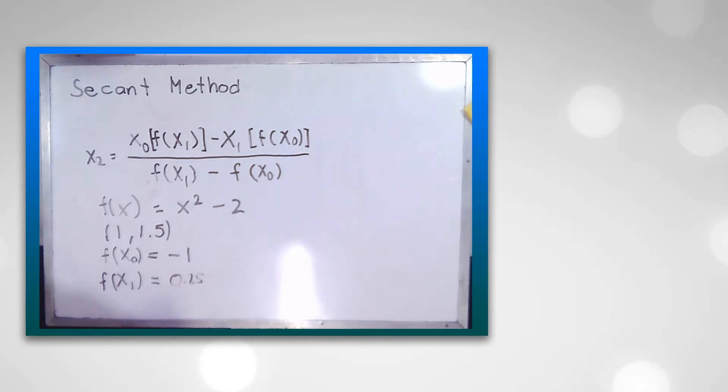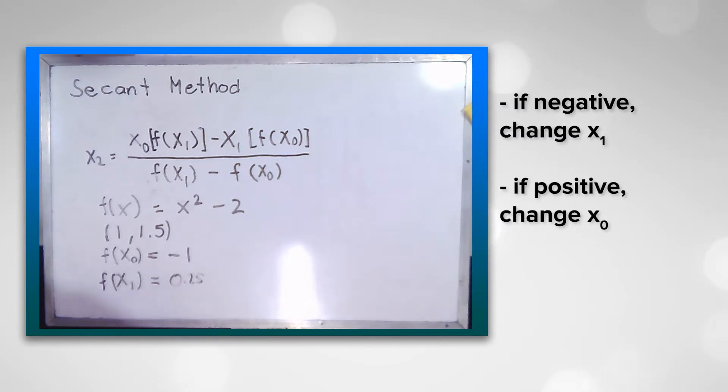If the product of f(x₀) and f(x₂) is negative, therefore on the next iteration we will be changing the value of x₁. On the other hand, if it is positive we will be changing the value of x₀.